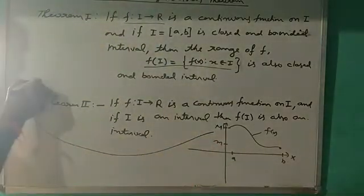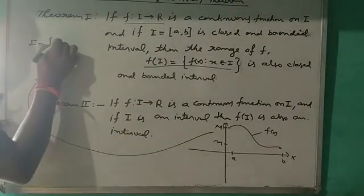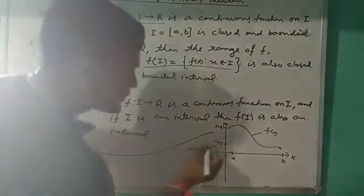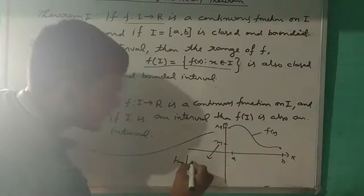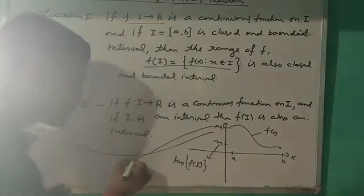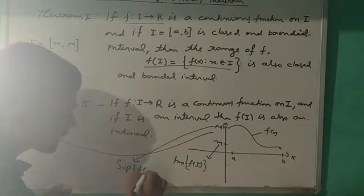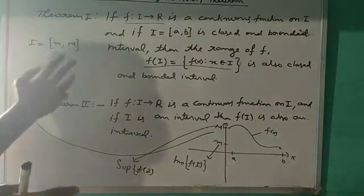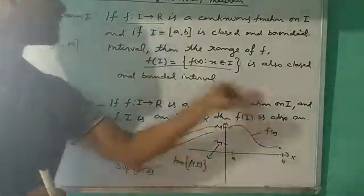This range is the interval [m, M], which is closed and bounded. Here, small m is the infimum value of the range set and capital M is the supremum value of the range set — the range set being f(I). The interval in the x-axis, i.e., the interval in the real line, is closed and bounded.